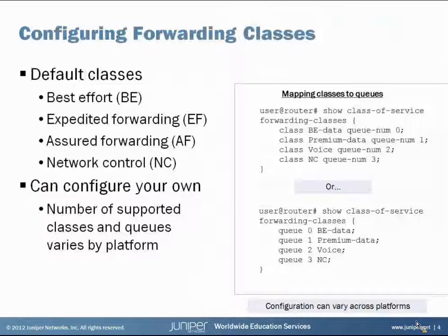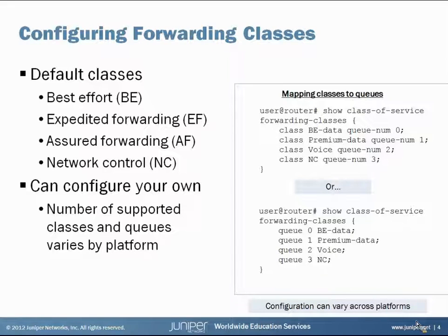In terms of configuring forwarding classes, a Junos-based device comes with four default classes already set up: best effort, expedited forwarding, assured forwarding, and network control. These are standardized traffic classes. I strongly encourage you to check out additional resources to learn about these standards, their terminology, and the CoS bit settings that go with each of those classes, because you're sure to see them in networks.